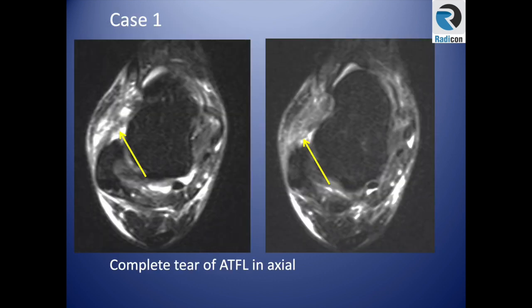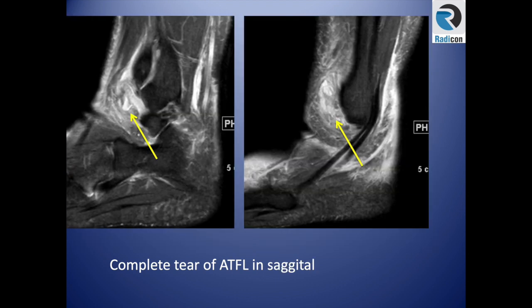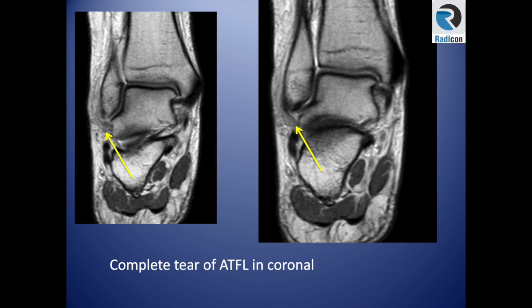Case one: looking at the axial image, the fibula has a coma shape, indicating we are at the level of the anterior talofibular ligament. There is severe attenuation of the anterior talofibular ligament with significant surrounding edema — an almost complete tear. On the sagittal view, we no longer see the nice band extending anteriorly to attach to the talus. On the coronal view, detachment of the anterior talofibular ligament from the tip of the fibula confirms this is a complete tear.